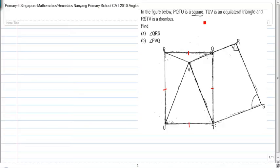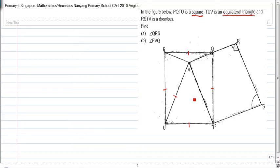TUV is an equilateral triangle. That means this side TUV — this triangle here — so this side is equal to this side, which is equal to this side, because all sides of an equilateral triangle are equal.